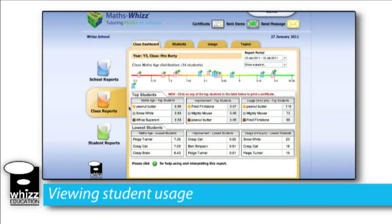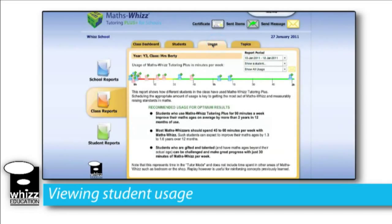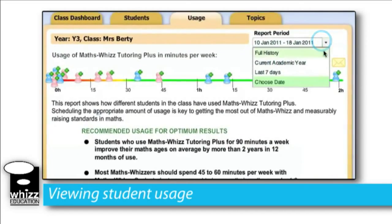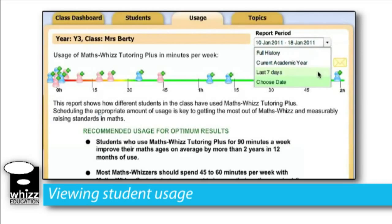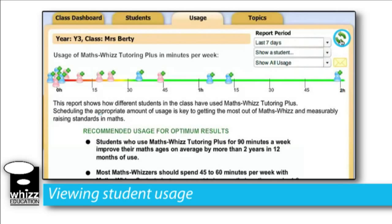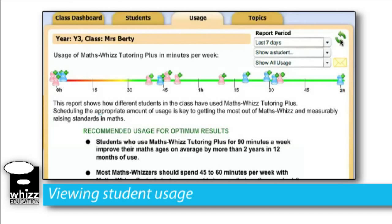By clicking on the usage tab we can gain a very quick overview of the students and their usage of Mathwiz. By manipulating the report period to either the full history, current academic year, last seven days, or choosing a date to which students have been using their Mathwiz. This may be of particular use when using Mathwiz as a homework. Some schools set Mathwiz as a homework and then by checking the last seven days or choosing the date they set the homework, there's no marking — they can simply log on, see that students have done their Mathwiz, and know that the tutor is delivering lessons unique to their specific ability in maths.